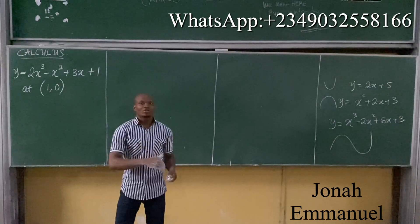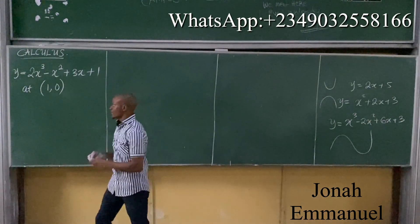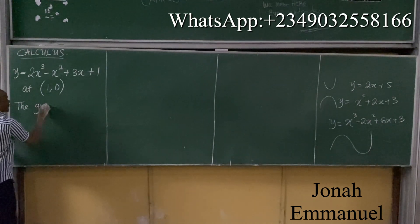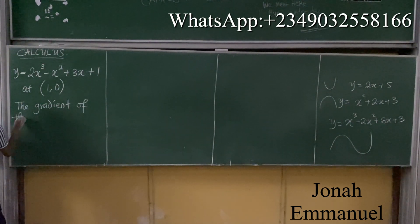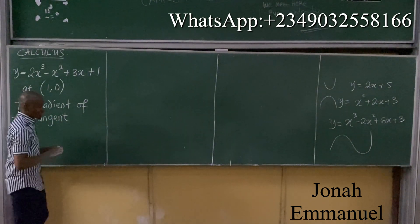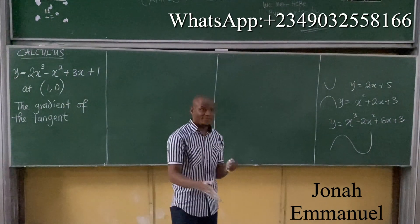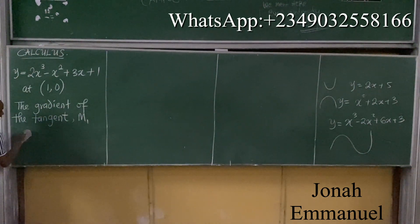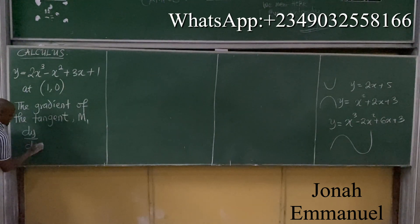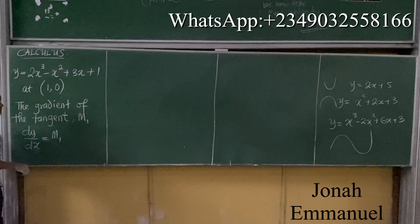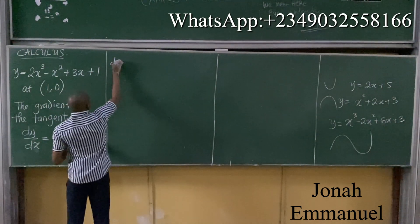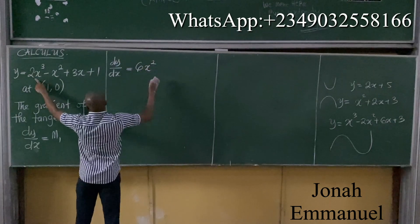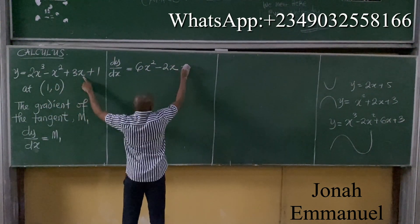We have to find the equation of the tangent and the normal. First, let's get dy/dx. For this, we have that the gradient of the tangent — M1 — is dy/dx. Differentiating gives us 6X² minus 2X plus 3. The constant drops out.